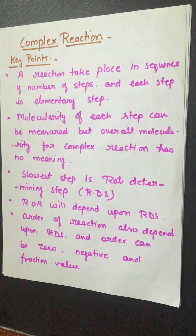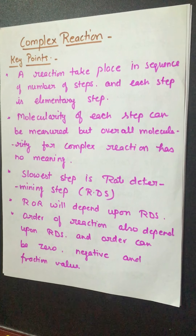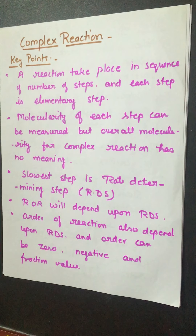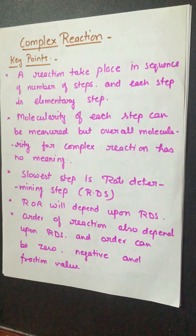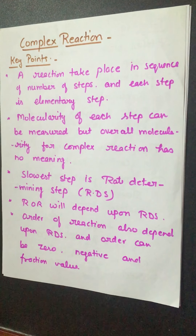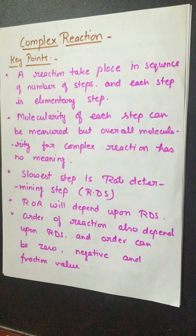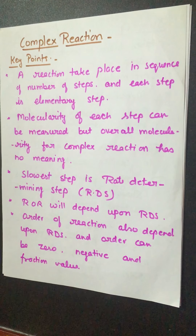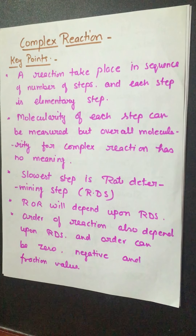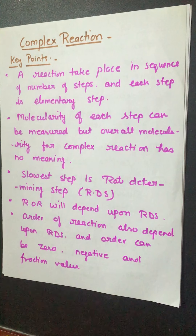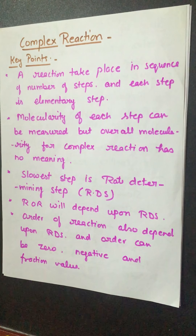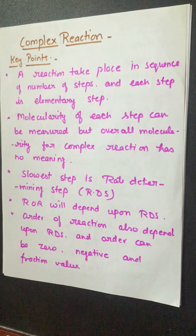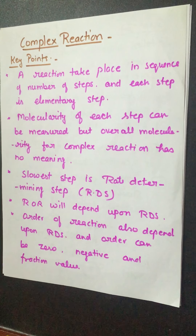Next is the RDS — rate determining step. If a complex reaction takes place in three or four steps, only one of those steps will be the slowest one, and that slowest step is the rate determining step.